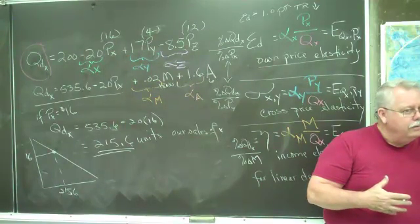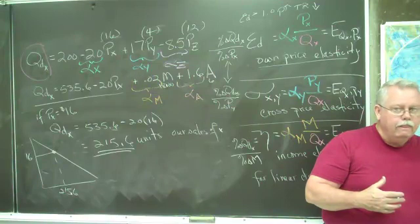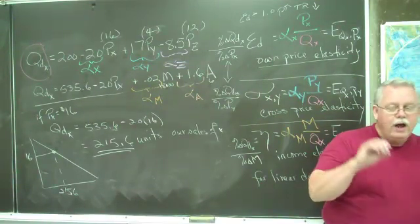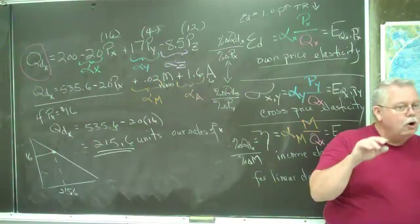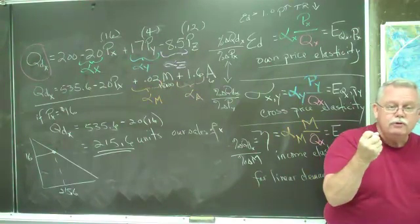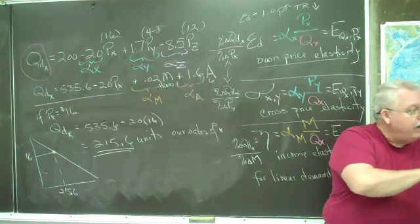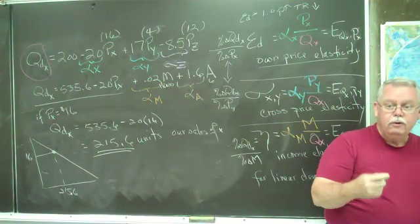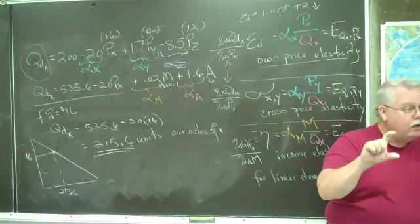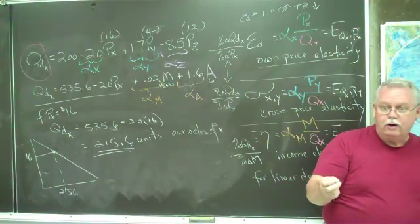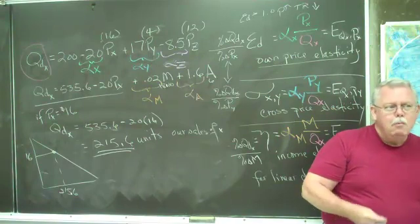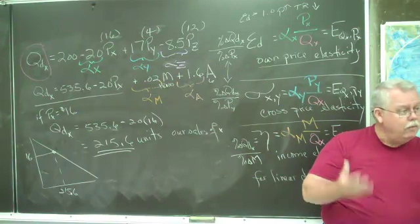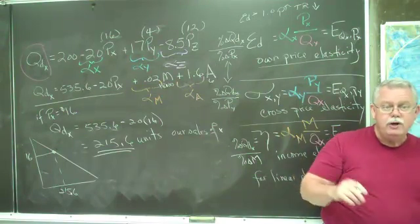Then what is an inferior good? One that people want less of as their incomes go up. Yeah. And not that we're talking about the quality of the product. We're talking about people's behavior when their income changes. If their income goes up, they buy less of the inferior good. Typical inferior goods would be ramen noodles, spam, the meat product, or maybe generic products. Mobile homes. Mobile homes. Are mobile homes an inferior good? Maybe. If people had more money, they would not buy mobile homes, they'd buy something else. Is that true?